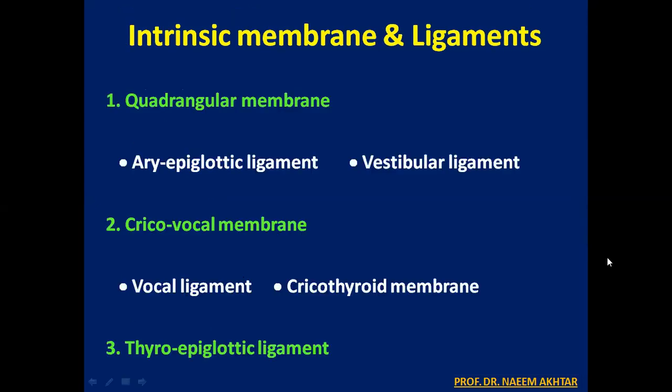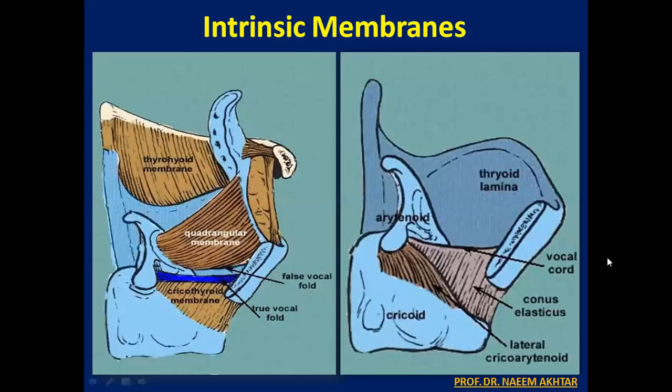The intrinsic membranes and ligaments connect the cartilages of the larynx to each other. These are three in number: the quadrangular membrane, the cricovocal membrane, and the thyroepiglottic ligament. The quadrangular membrane consists of the aryepiglottic ligament and vestibular ligament, whereas the cricovocal membrane consists of the vocal ligament and cricothyroid membrane.